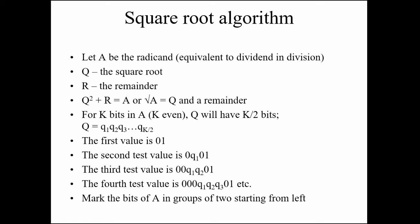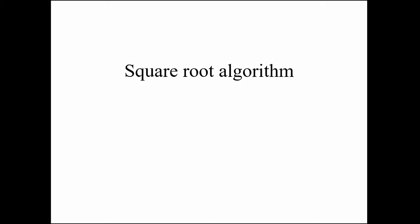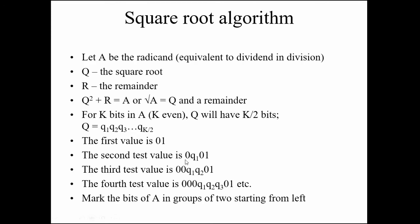If A has K bits, Q will have K/2 bits. These are the test case values we will follow. The first test case value is 01. The second test case value is 0, Q1, 01 — where Q1 is the first bit of Q obtained from the algorithm, a preceding 0 is added, and 01 remains fixed for all test cases.